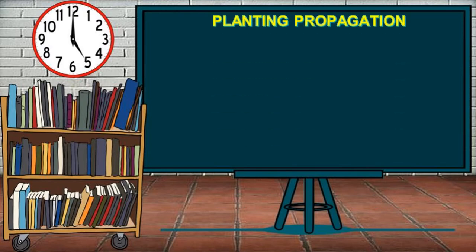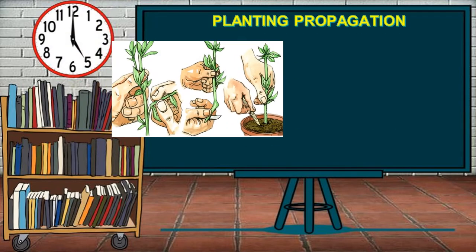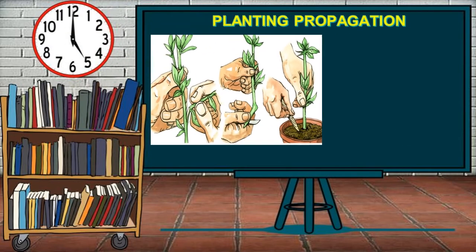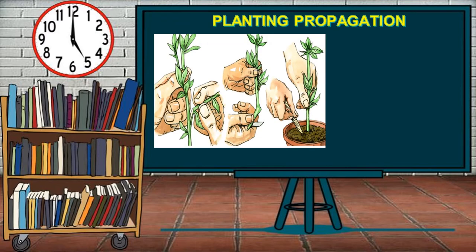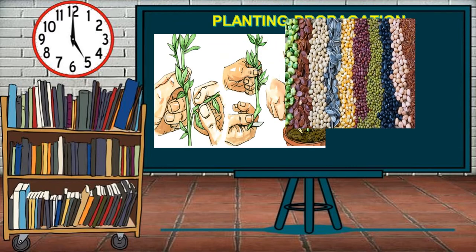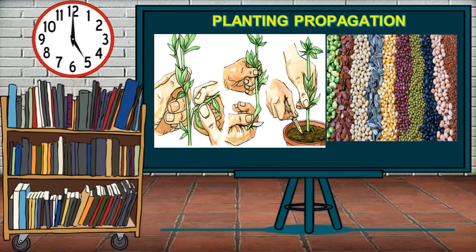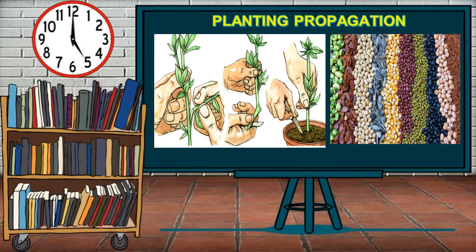Plant propagation. Plant propagation is the process which grows new plants from a variety of sources such as seeds, cuttings, and other plant parts. Plant propagation can also refer to the man-made or natural dispersal of seeds.